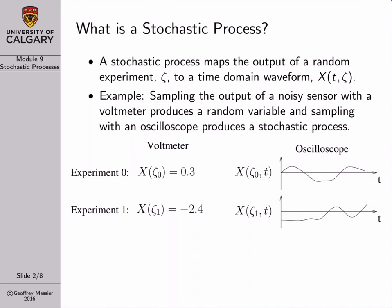A stochastic process is very similar to a random variable. We can think of a stochastic process as a function that maps the outcome of our random experiment to a time-domain waveform. So rather than mapping our random experiment to a number, we map it to a waveform. When we write a stochastic process in functional form, it's a function not only of the outcome of our random experiment, zeta, but it's also a function of time.